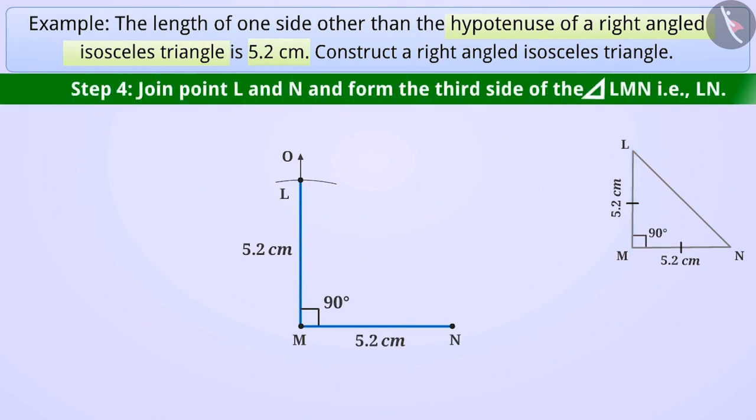Step 4. Now, we have two sides of the triangle. Next, we will join point L and N and form the third side of the triangle LMN which is the hypotenuse LN.